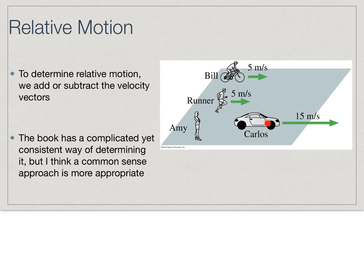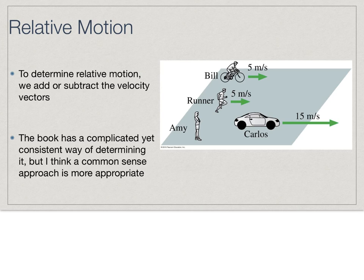Let's look at Carlos. Carlos is going 15 meters per second to the right relative to Amy, who is stationary. But what is his velocity relative to Bill? Bill is moving 5 meters per second to the right and Carlos is moving 15. So if I look at it from Bill's point of view, he's going to see Carlos move away from him — still moving to the right, but not at a rate of 15 meters per second. He's going to see Carlos move away at 10 meters per second, which is the difference between them.